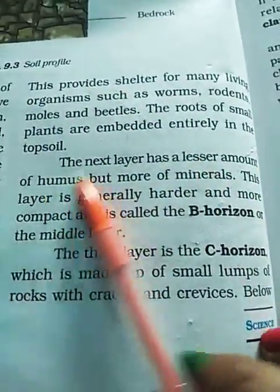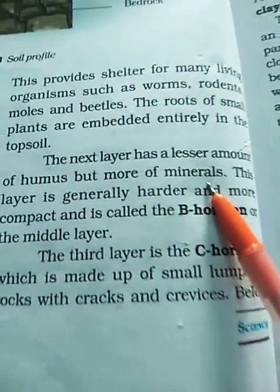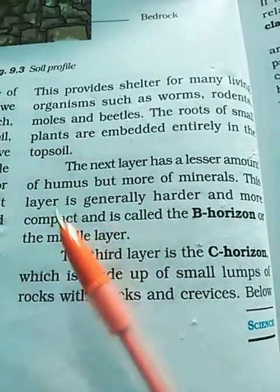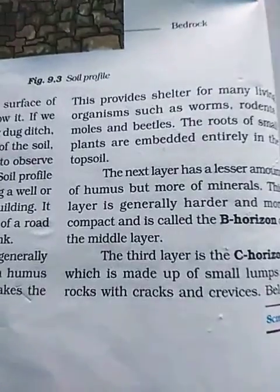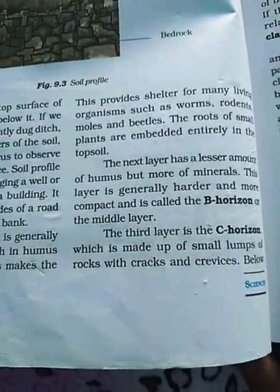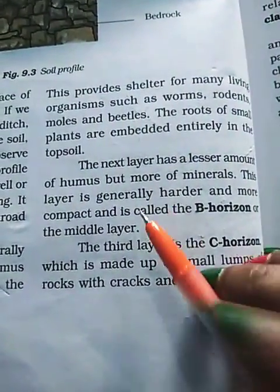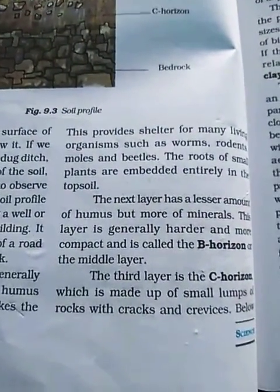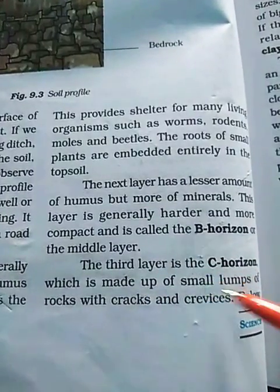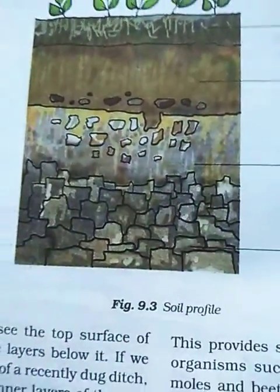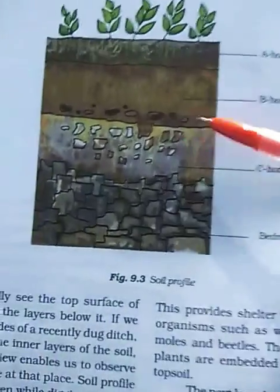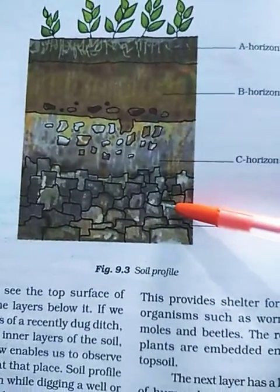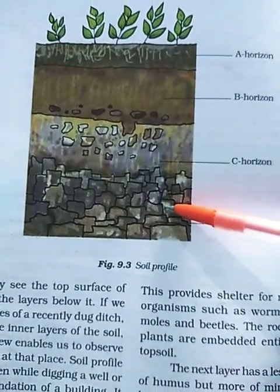The next layer has a lesser amount of humus but is rich in more minerals. This layer is generally harder and more compact — meaning the particles are very closely packed with very little space for air and water to get trapped. This second layer is called the B horizon or the middle layer. The third layer is the C horizon, which is made up of lumps of rocks with cracks and crevices. Below this layer is the bedrock or the parent rock, which is very hard and difficult to dig with a spade.